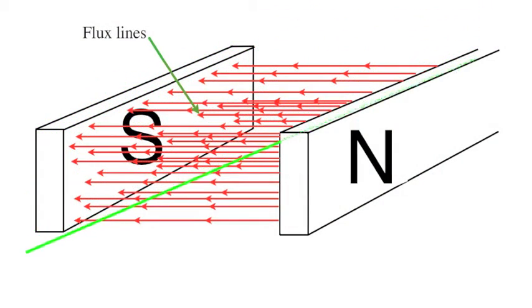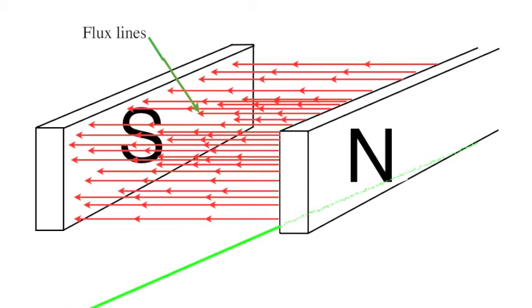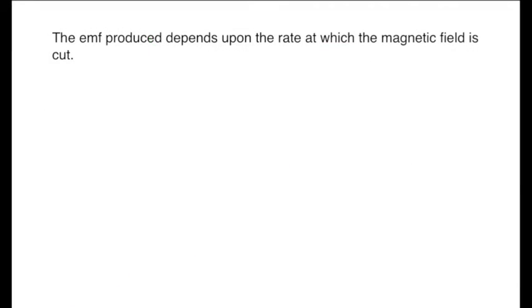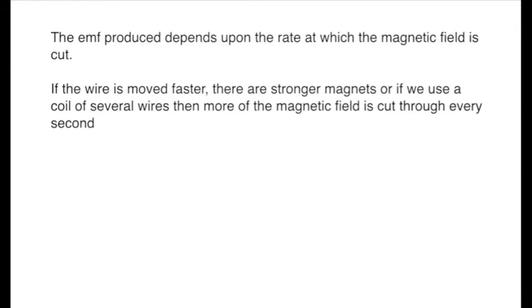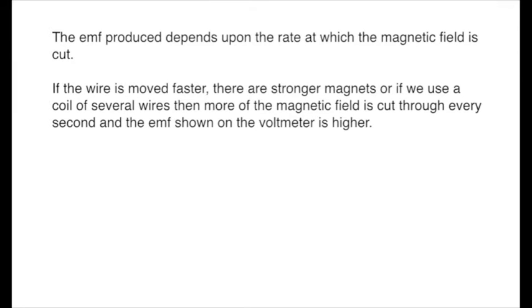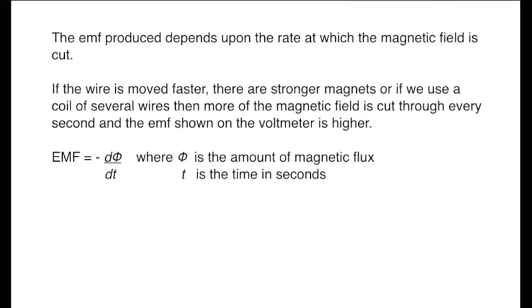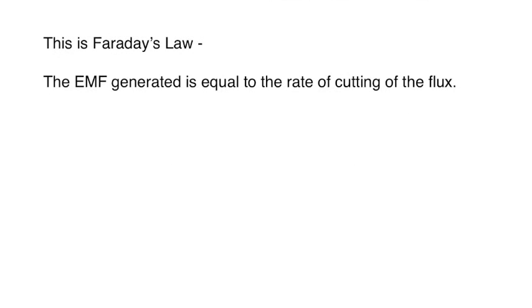So when a conductor, such as a wire, cuts down through a magnetic field, the EMF depends upon how fast we cut through that field. That is, the rate at which the magnetic field is cut. The EMF will be greater if the magnets are stronger, if we use several turns of wire in a coil, or we move that coil or wire much faster. The mathematical expression for this is the EMF equals dφ/dt, where φ is the flux and t is the time. This is Faraday's law. The EMF generated is equal to the rate of the cutting of the flux.